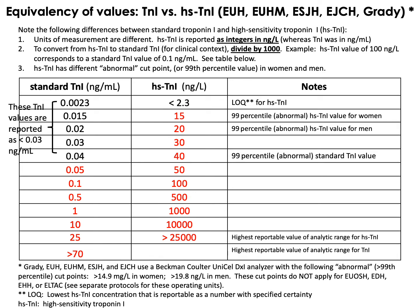Before we discuss the troponin protocols, let's highlight some key differences between standard troponin and high-sensitivity troponin. Note that our hospitals test for cardiac troponin I and not cardiac troponin T. Standard troponin is reported in nanograms per mL, with values expressed up to two decimal places, particularly for values less than 1 ng/mL. High-sensitivity troponin, on the other hand, is measured in nanograms per liter — different by a factor of a thousand — and values are reported only as integers. So a value of 100 ng/L for HS troponin is equivalent to a standard troponin value of 0.1 ng/mL.